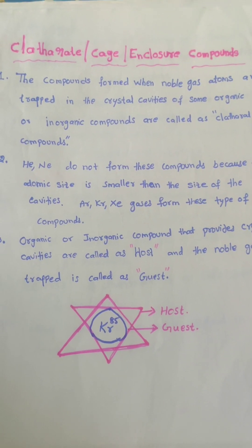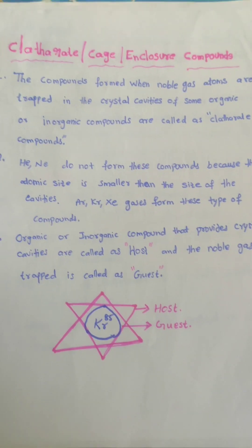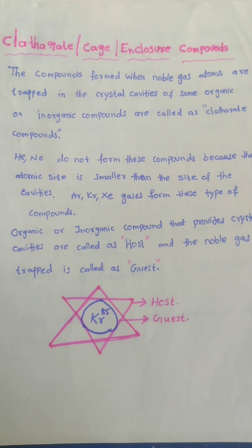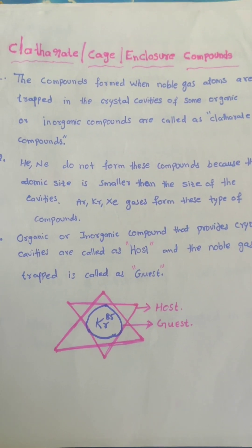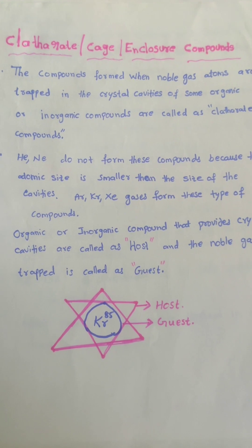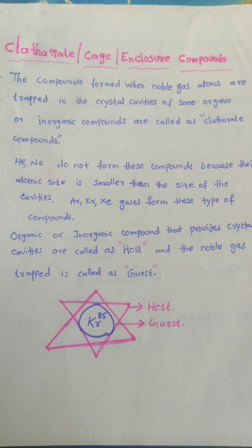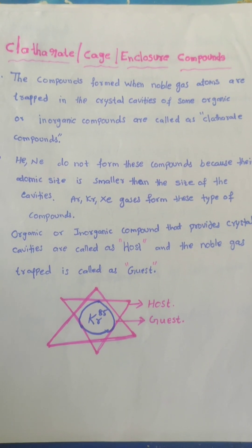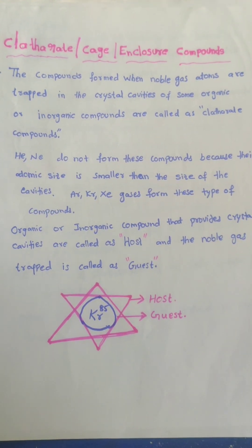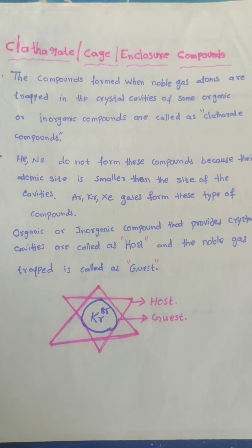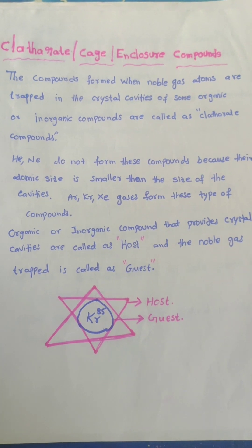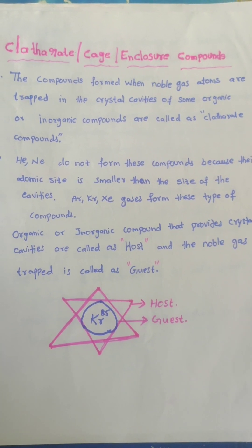Hello my dear students. In this video we are going to study about the clathrate compounds. Clathrate compounds are also known as cage compounds and enclosure compounds.